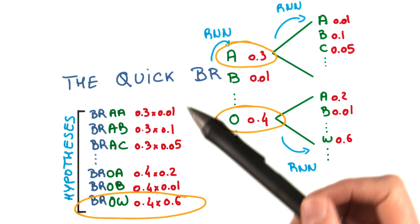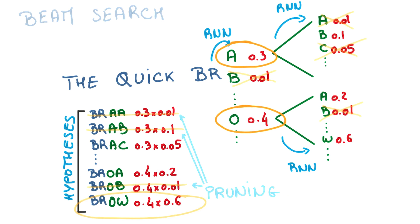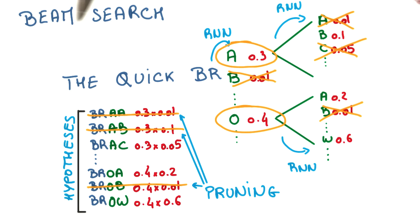Of course, if you do this naively, the number of sequences that you need to consider grows exponentially. There is a smarter way to do that, which is to do what's called a beam search.